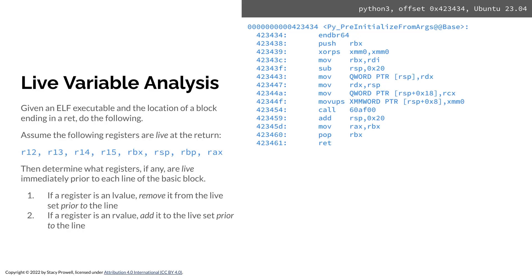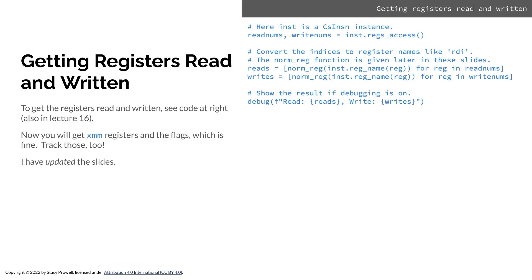You'll want to know what registers are read and which ones are written, and you'll want to convert them to normalized register names — there's some code that does that. To get the registers that are read (R values) and written (L values) for an instruction, use regs_access. So inst is an instruction instance — that's what comes back from the disasm — and you invoke the regs_access method on it, which hands back a pair consisting of readnums and writenums. These are arrays of numbers, and each register is identified by a number. I want names, so I'm going to use two Python list comprehensions to make that change.